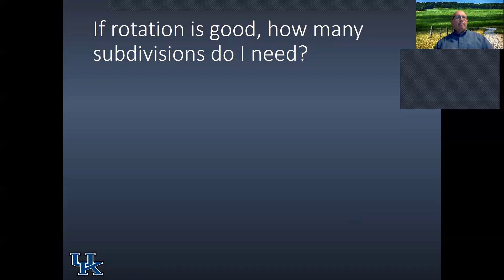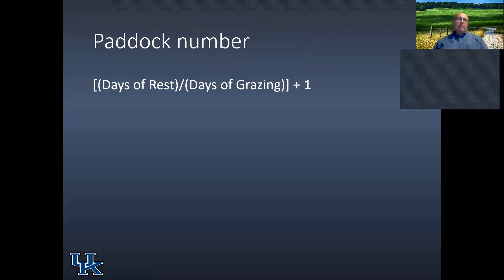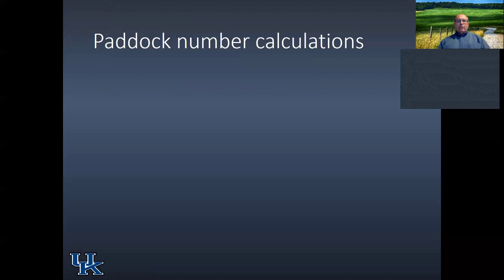A common question when setting up rotational grazing — possibly moving from one or two pastures with no rotation to a managed system — is: how many subdivisions do you need? Forage systems are mathematical. You can calculate paddock number by knowing the days of rest needed for a particular forage and the days of grazing, then adding one to that result.